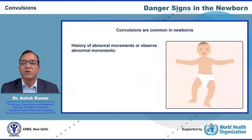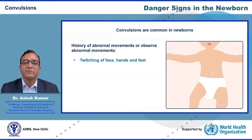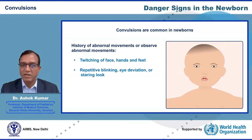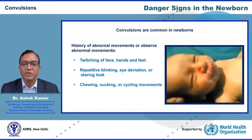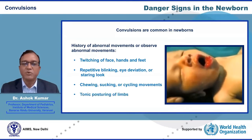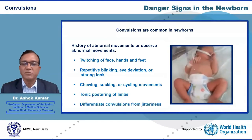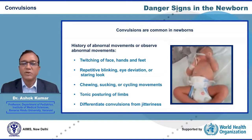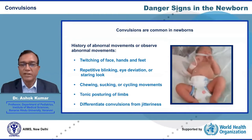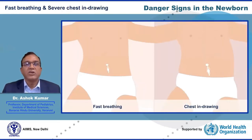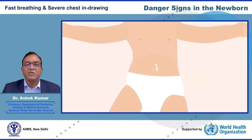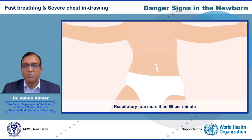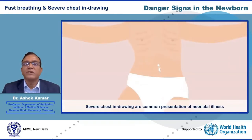Convulsions are common in newborns and may manifest as abnormal body movements — twitching of hands and feet, repetitive blinking, eye deviation, staring, persistent chewing or sucking, purposeless cycling movements of limbs, or tonic posturing. Jitteriness must be differentiated from convulsions: jitteriness involves tremulous limb movements that can be stopped by holding the limb. Fast breathing (respiratory rate ≥60/min) and chest indrawing indicate respiratory distress.